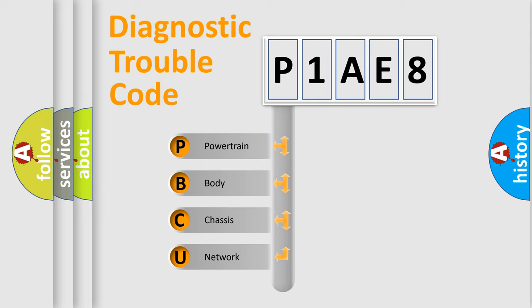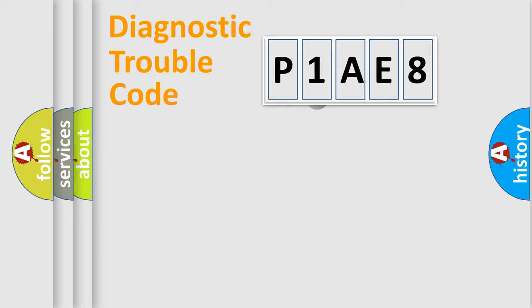We divide the electric system of automobile into four basic units: Powertrain, body, chassis, network. This distribution is defined in the first character code.